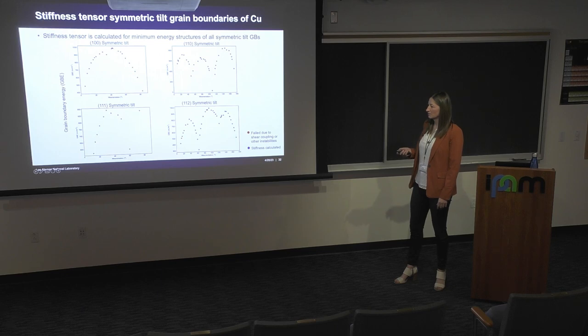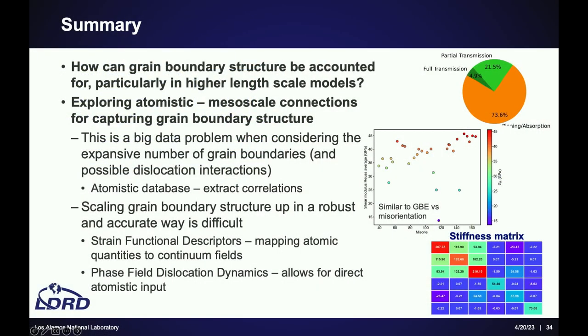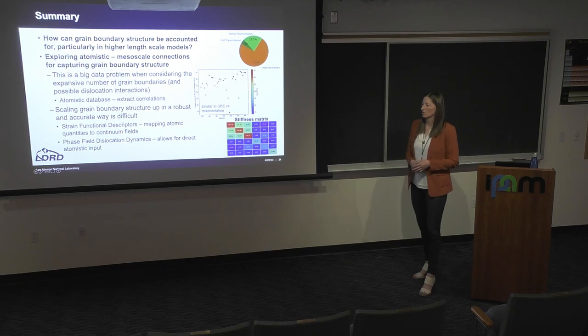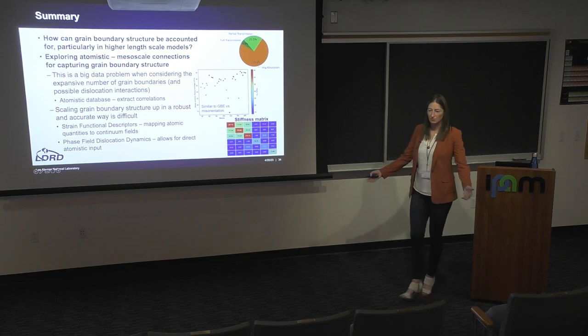In summary, whether grain boundary structure really matters at the macro scale and how large that effect is for different cases is hard to determine. We're pursuing a bottom-up approach, and there is a crystal plasticity component in the project to tackle that question. The methods being developed here — the atomic database, SFDs, phase field with KMC, and the Eshelby inclusion approach — are all about accounting for grain boundary structure effects at different scales. With that, I'm happy to answer any questions.